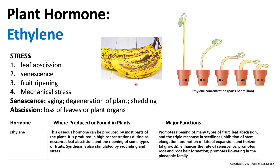Another interesting fact about ethylene is that auxin actually promotes the production of ethylene. This makes sense because auxin promotes cell growth and differentiation. If cells are continually growing in a plant or a fruit, it will ultimately lead to ethylene production, since ethylene is required for several ripening processes.